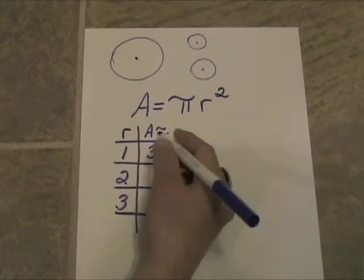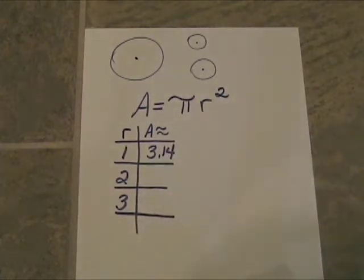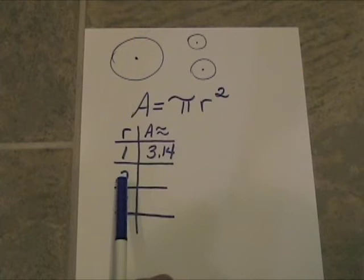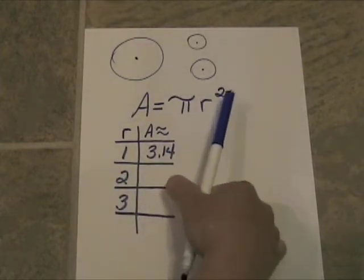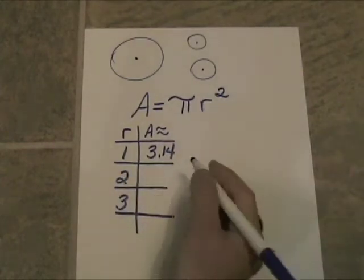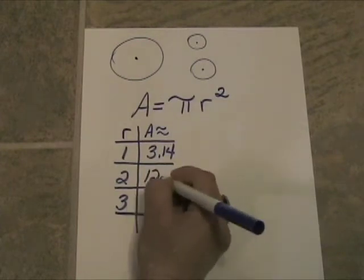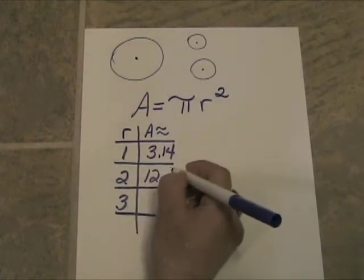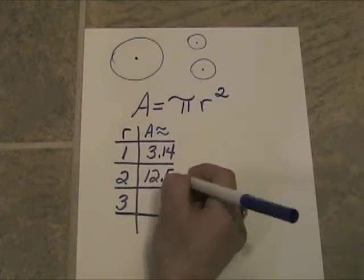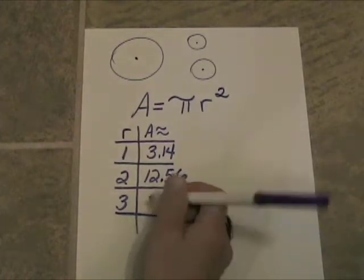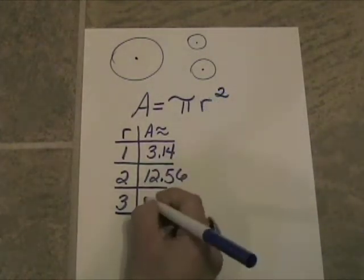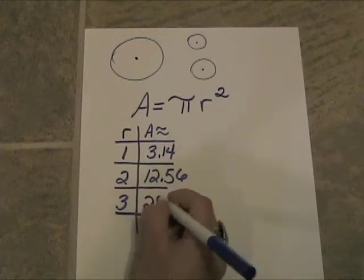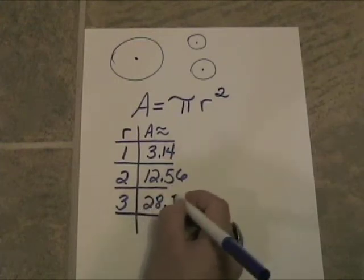We'll round all of these to the nearest hundredth. If the radius is two, we'll take two, square it, and get four. Four times pi gives us approximately 12.56. And three squared is nine; nine times pi is approximately 28.26.